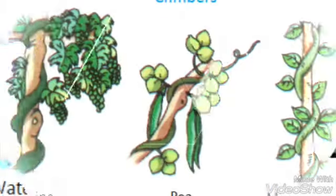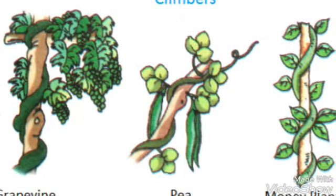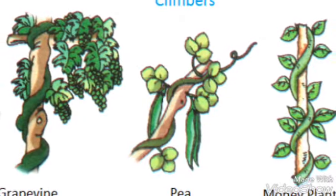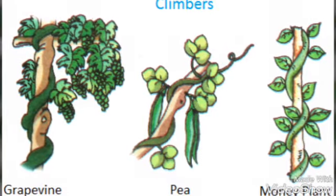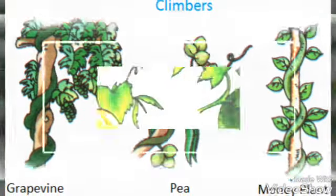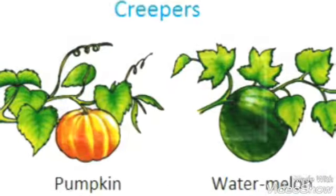Climbers, grapevine, pea, money plant. Creepers, pumpkin, watermelon.